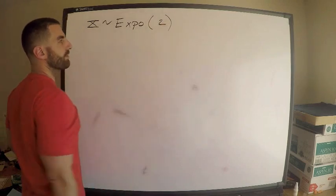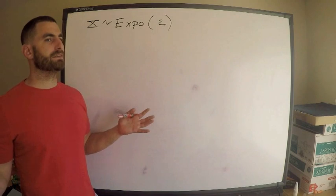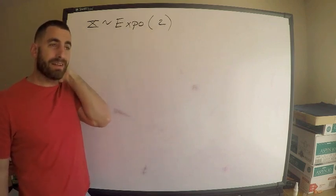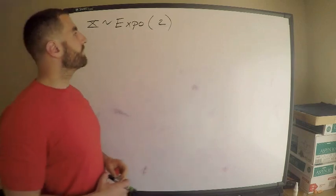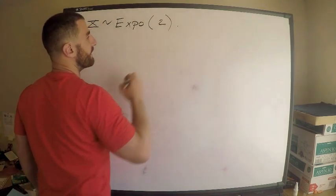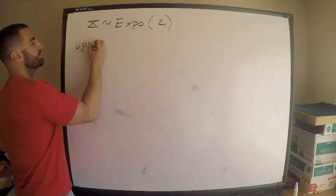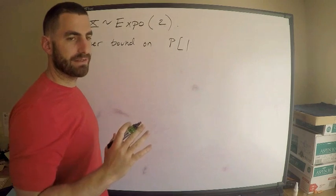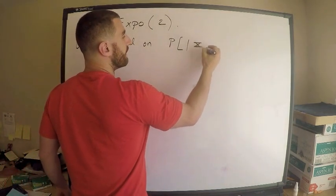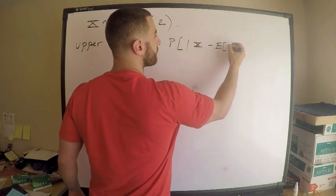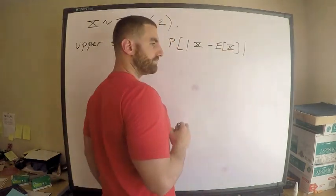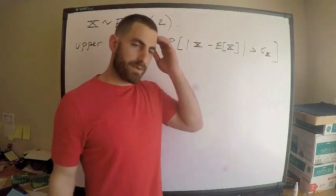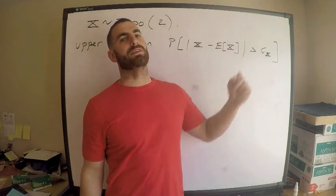The parameter lambda is two — different books use lambda, beta, or theta for the exponential parameter. I want to find an upper bound on the probability that the distance of the random variable from its mean is greater than its standard deviation.